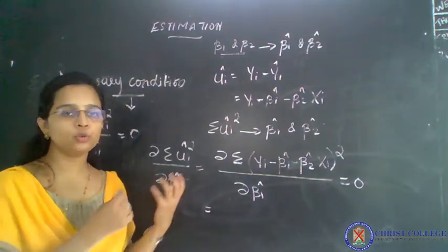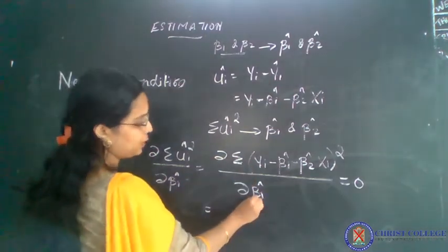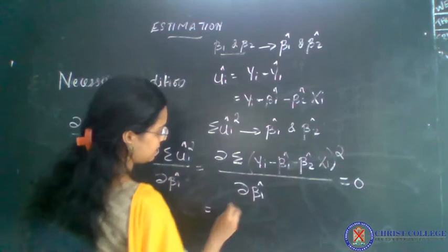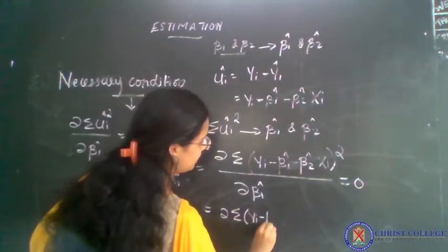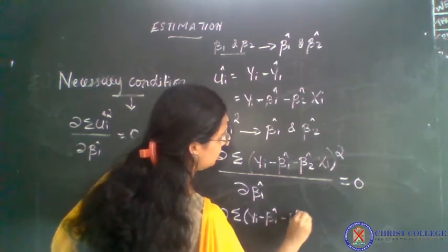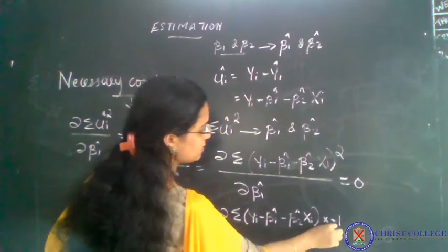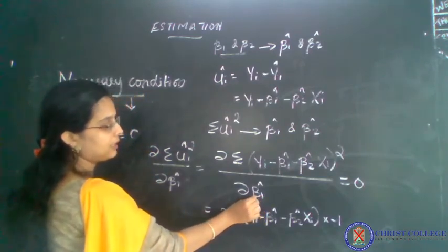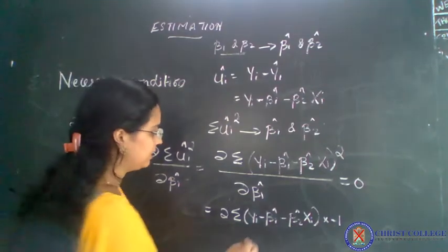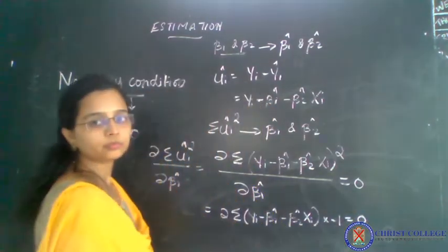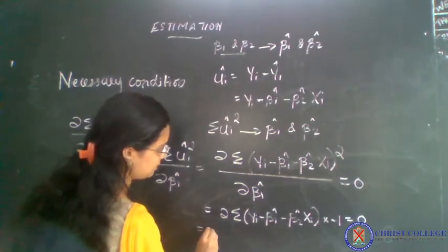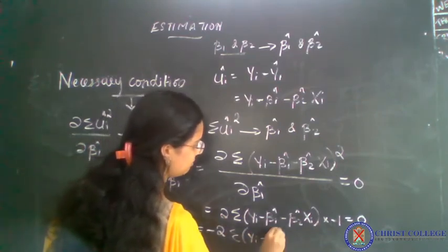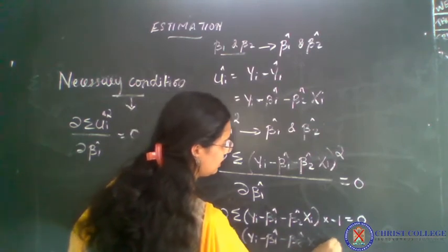Now, we know how to find the partial derivative here. With respect to beta 1 hat — since beta 1 hat is the term being differentiated — we can write it as: 2 sigma (y_i minus beta 1 hat minus beta 2 hat x_i) into minus 1. Minus 1 is the component with regard to beta 1 hat. So this derivation with respect to beta 1 hat gives minus 2 sigma (y_i minus beta 1 hat minus beta 2 hat x_i) equal to 0.